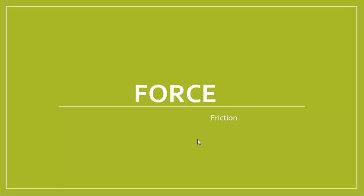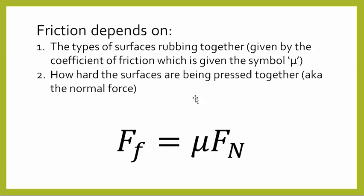But we're going to look at a different way of calculating friction and basically making things a little more complicated as we tend to do. So friction depends on two things. The types of surfaces rubbing together, in the equation that is symbolized by the Greek letter mu, M-U. So here we have the mu.